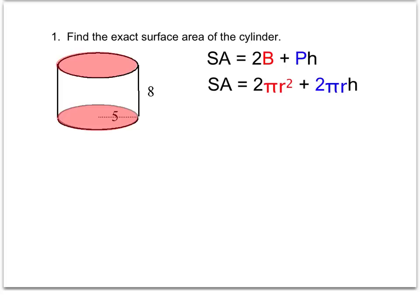When we're working with cylinders, we change that b because b represents the area of the base, and since the base is a circle, the area becomes πr².